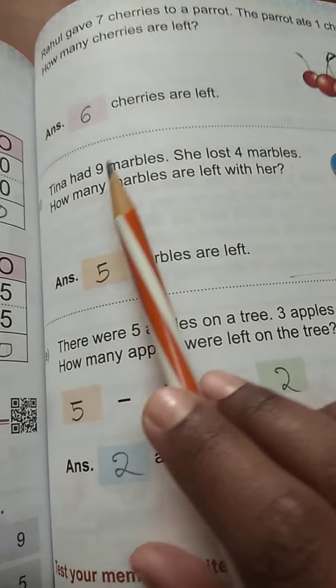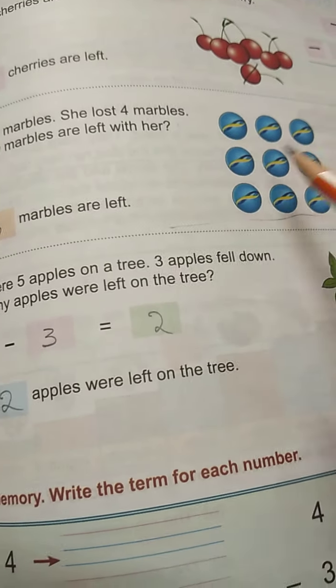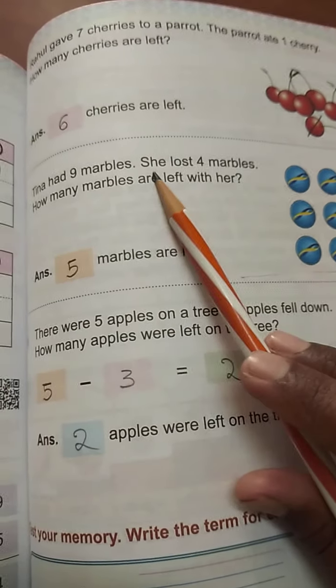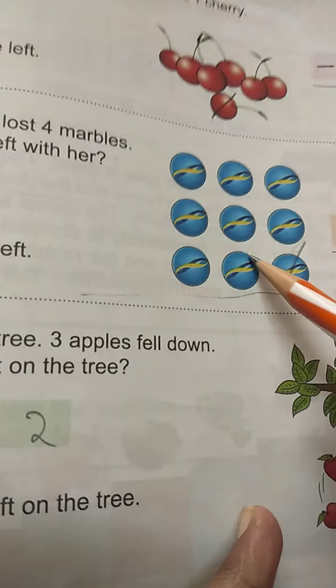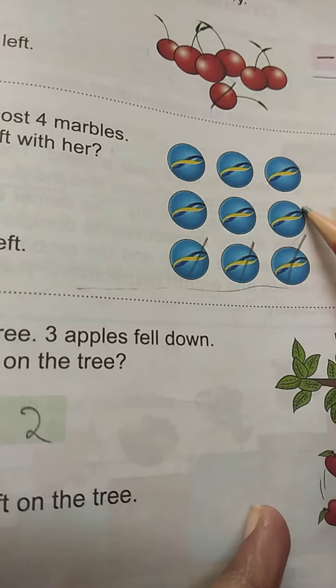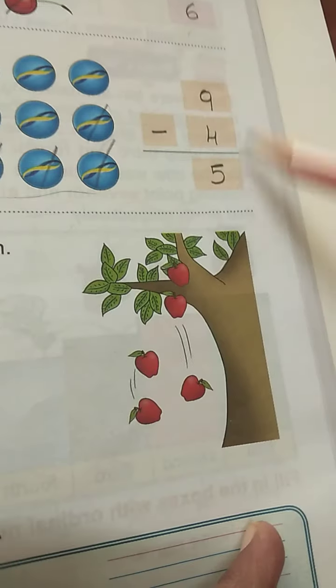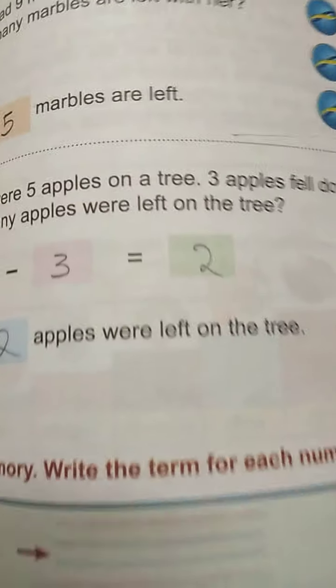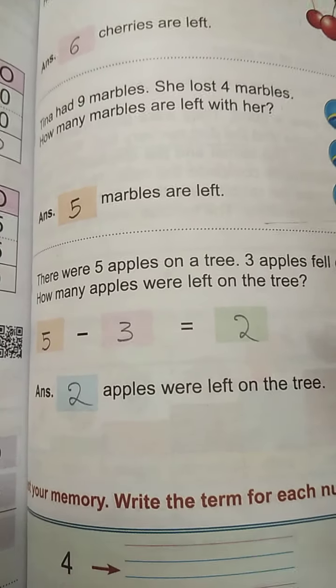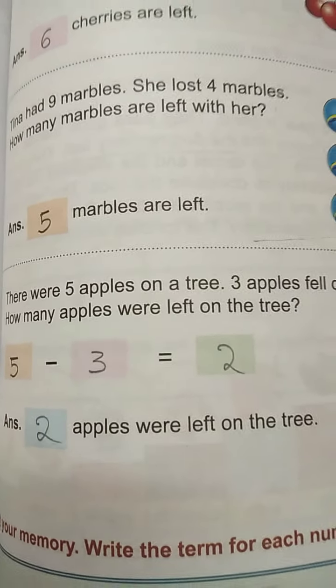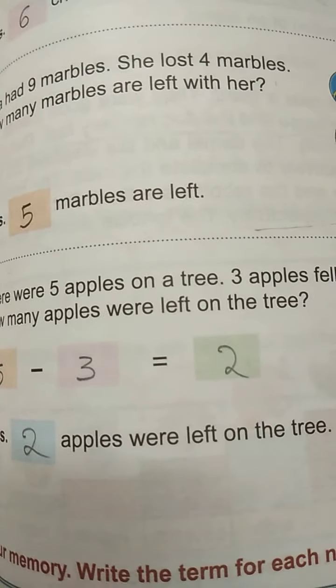Next. Tina had 9 marbles. 9 marbles means 9 balls. She lost 4 marbles. So from these, 4 balls were lost. Lost 1, 2, 3, 4. So how many left? 1, 2, 3, 4, 5. So 9 minus 4 is 5. Do the rest. Do these word problems yourself. Very easy. Okay? Here your chapter is finished.